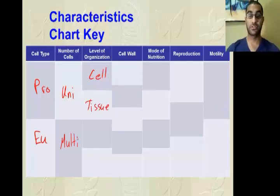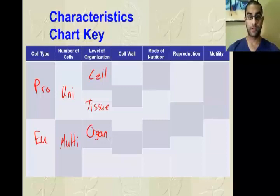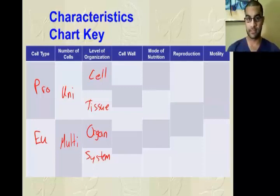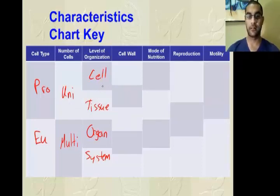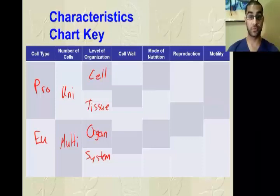Tissue is next — a collection of cells that all perform the same function. Then we have an organ, which is multiple combinations of tissues performing the same function. An organ system would be next: multiple organs combined together for the same task. Then we get up to the organism. Note: you can be an organism without having body systems — you could be unicellular. We'll talk about which levels of organization each kingdom can reach as a key distinction between them.